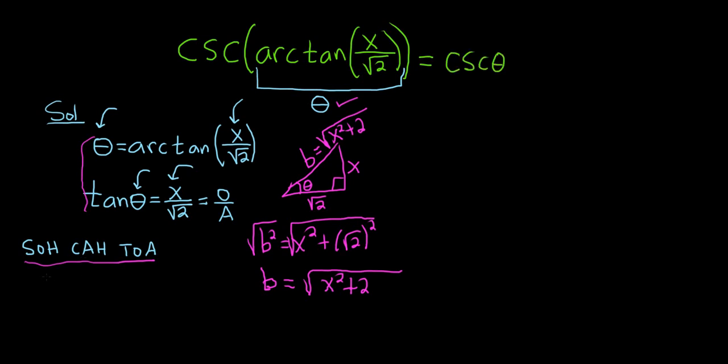And now think about SOH-CAH-TOA. So cosecant is 1 over sine, so it's HO. So it's H over O, so it's hypotenuse over opposite, because cosecant is 1 over sine. So instead of SO, it's HO, it's backwards.